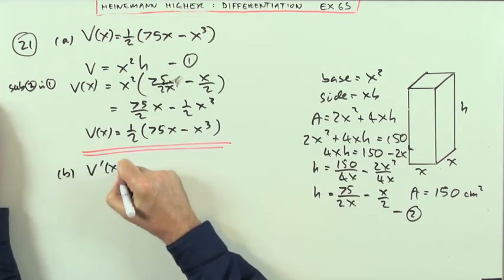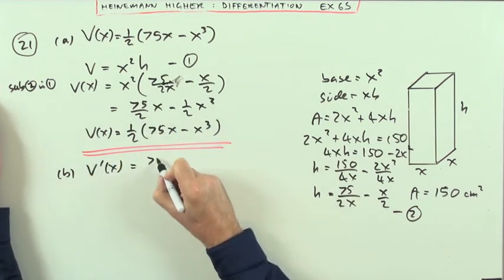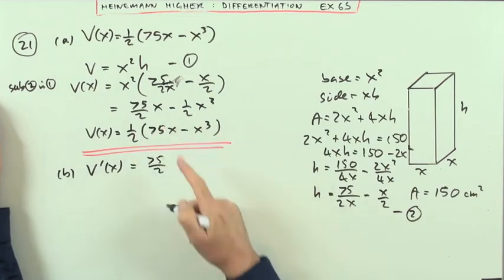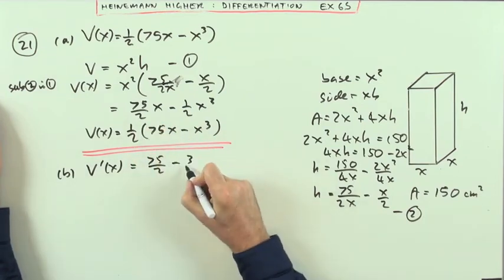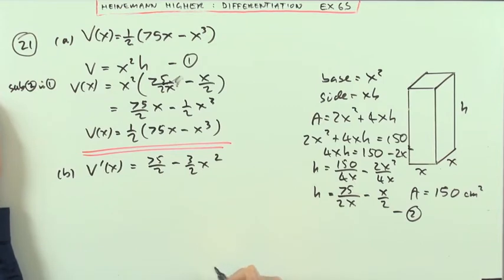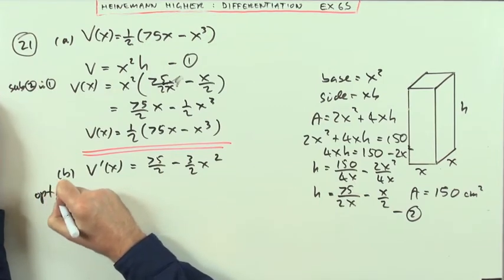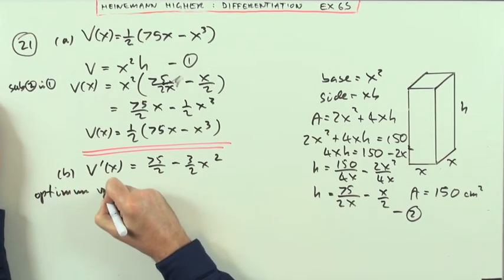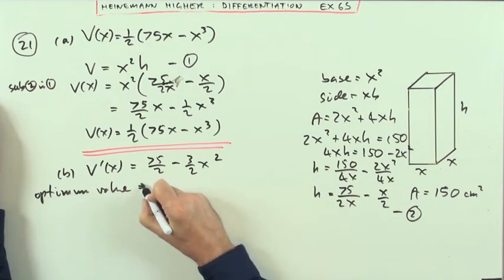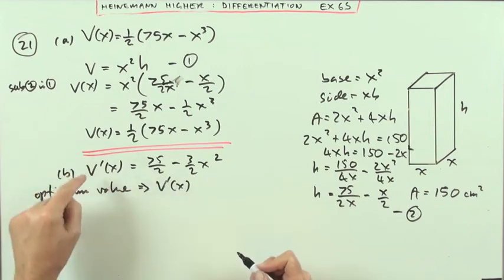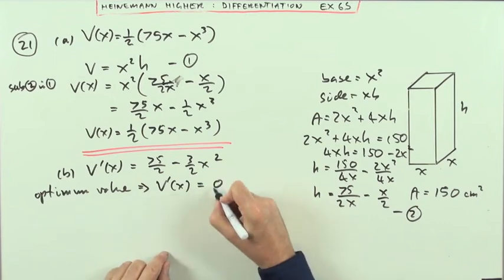Right, so V'(x), I'll go to this one here, would be 75 upon 2 being the coefficient of the linear term, minus 3 upon 2 x squared. And I know I'm going to have an optimum. You'll get an optimum value if this derivative, if the rate of change of the answers, is ever zero.